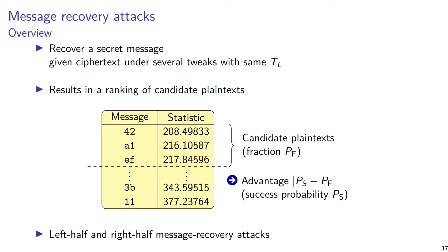We're not going to get a single output like 'this is the secret message.' Instead, we get a ranking of candidate plaintexts. For example, for a one-byte message, there will be for every value of that byte a test statistic — very similar to the chi-square statistic — and the list of candidate plaintexts is sorted by this statistic. The top portion of that list is the most likely candidates. In practice, you can discard most of the list except for a fraction PF, and with some probability of success PS, the real message is in that fraction. The advantage of the message recovery attack is the difference between PS and PF.